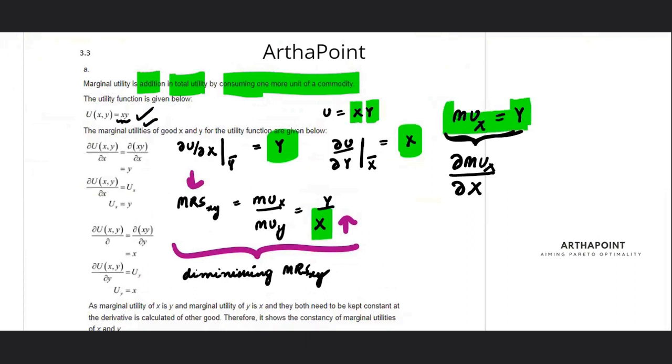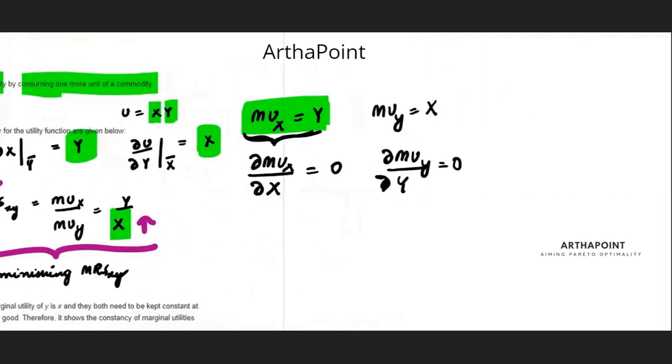So if I differentiate this again with respect to X, what will I get? I will get 0. Similarly, marginal utility of Y is X. If I differentiate marginal utility of Y with respect to Y, what will I get? 0.